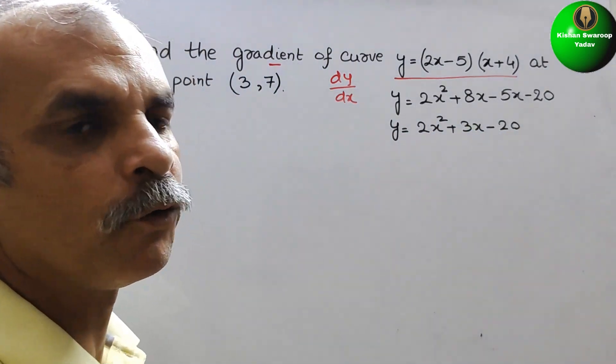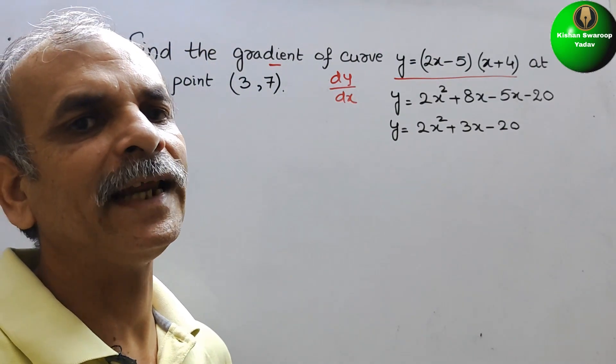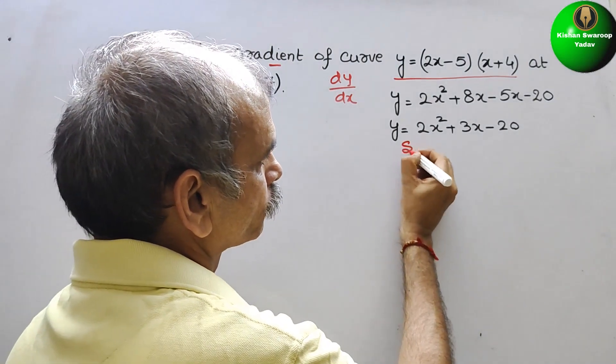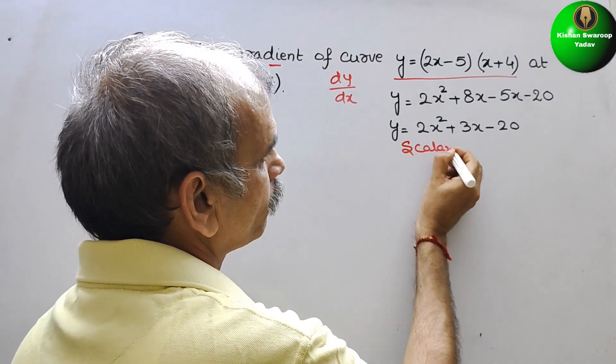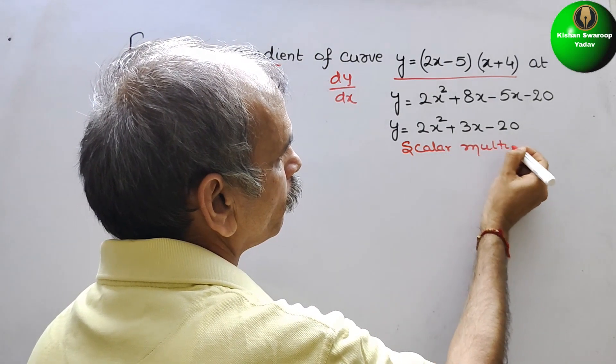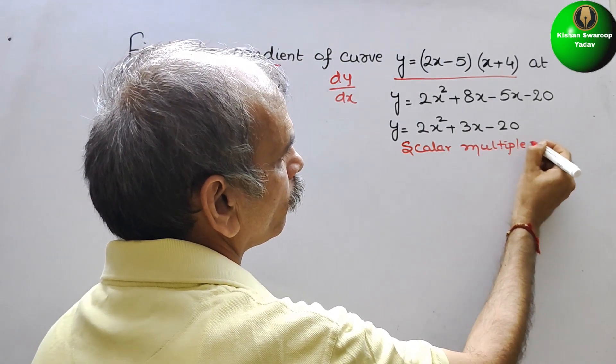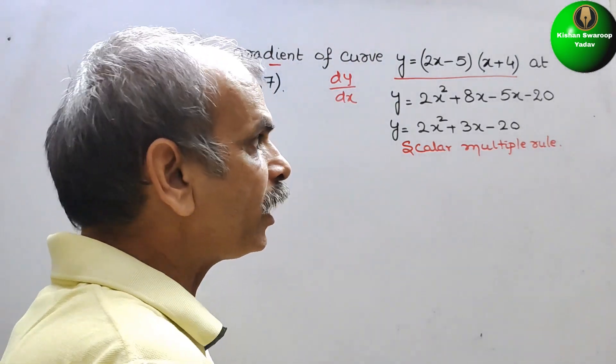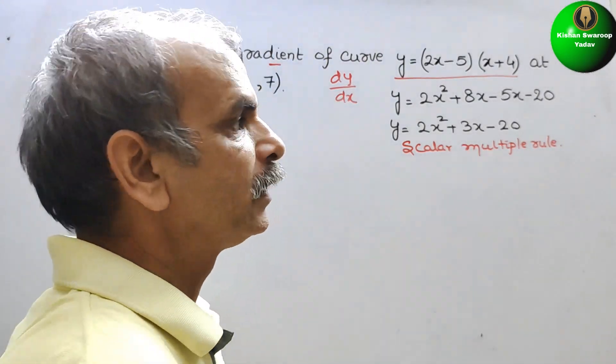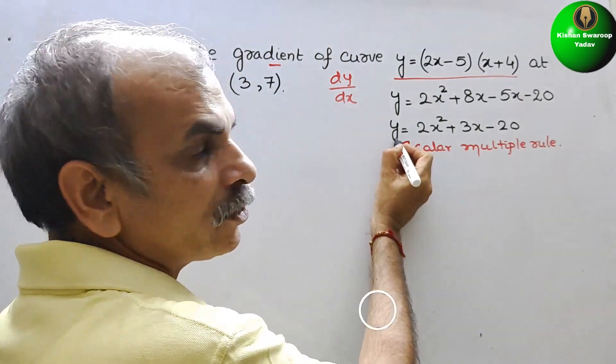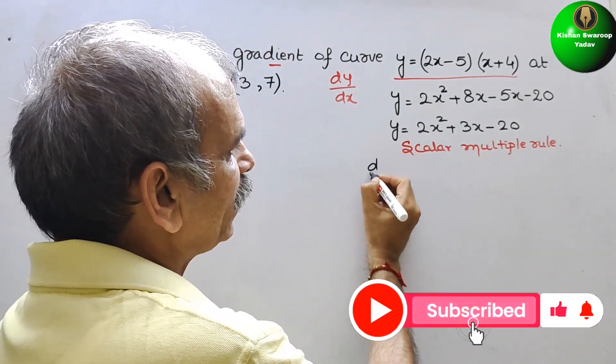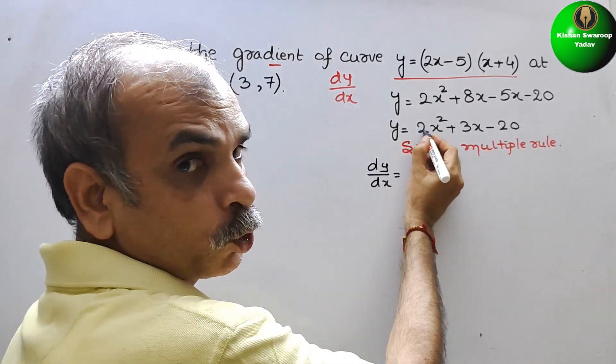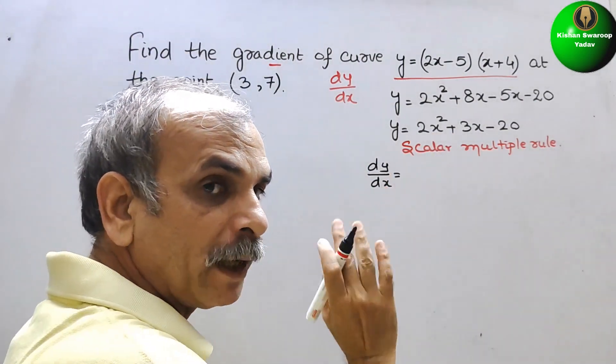Now we will go for our scalar multiple rule. So here what we have to do? We have to go for splitting of that. That means this we can write it as dy by dx is equal to this 2. That is your multiplication. So that is constant we will write like this 2.